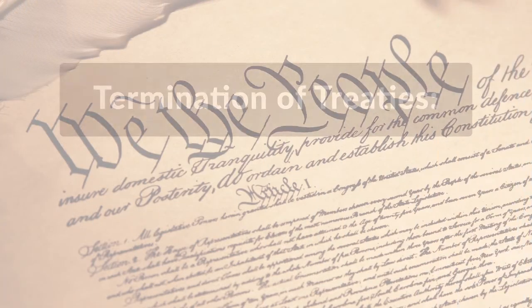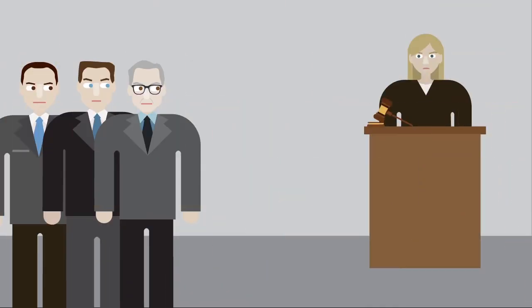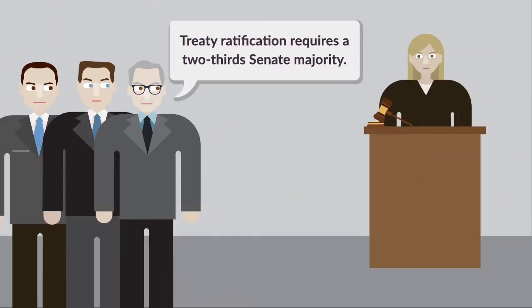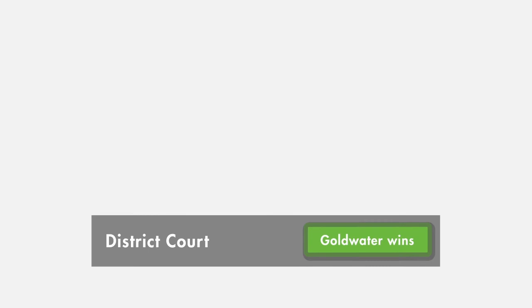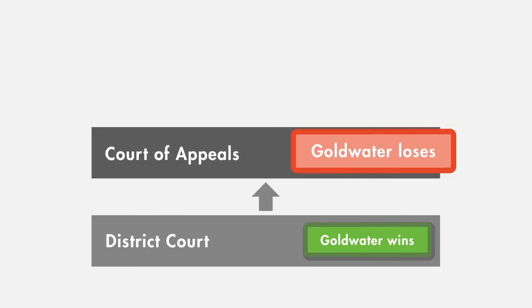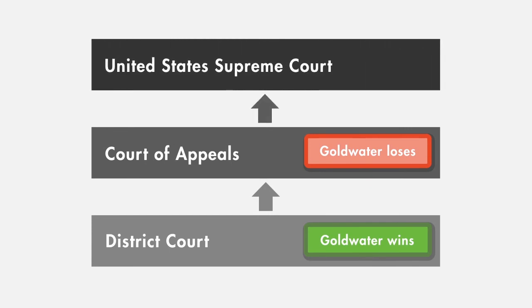The Constitution is silent on how a treaty can be terminated. The senators argued that because a two-thirds majority in the Senate is required to ratify a treaty, the same Senate approval is also required to nullify a treaty. The district court agreed and held that congressional approval is required for the termination of a treaty. The court of appeals reversed, holding that unilaterally terminating the treaty was within the president's authority, and the United States Supreme Court granted cert.